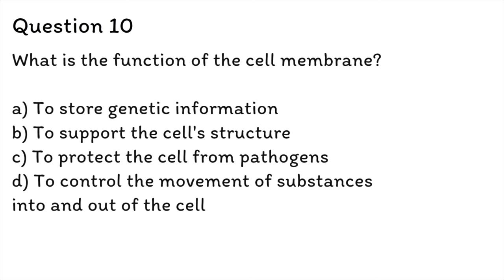Question 10: What is the function of the cell membrane? A. To store genetic information. B. To support the cell structure. C. To protect the cell from pathogens. D. To control the movement of substances into and out of the cell. The correct answer is D. For the GED, you are expected to know the functions of the organelles — you just need a good idea of what they are. The cell membrane is a thin, flexible barrier that surrounds the cell. Its main function is to control the movement of substances into and out of the cell, while also providing protection and support for the cell.